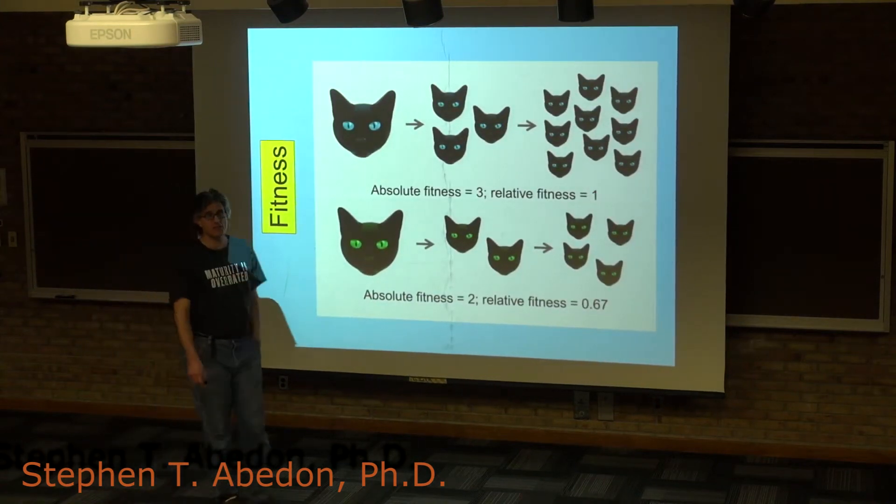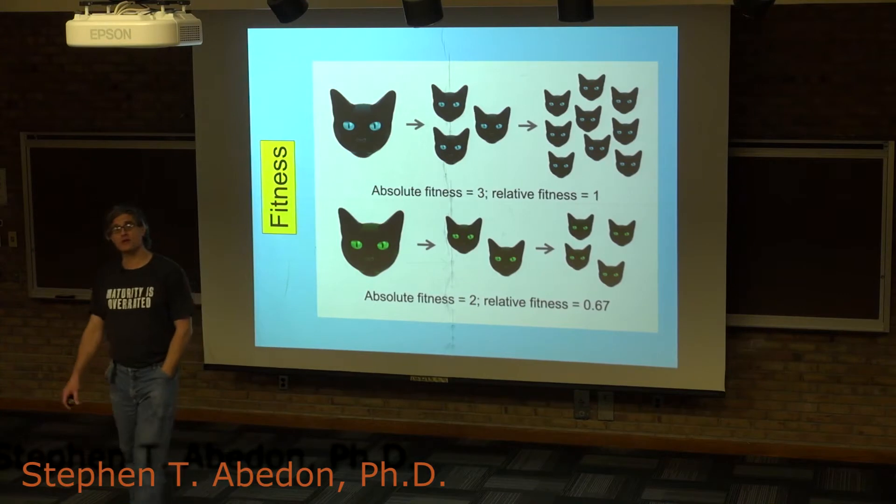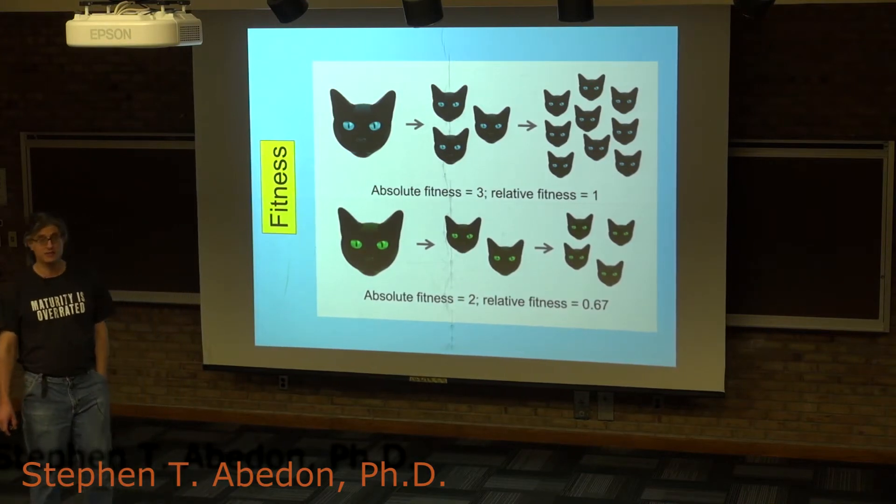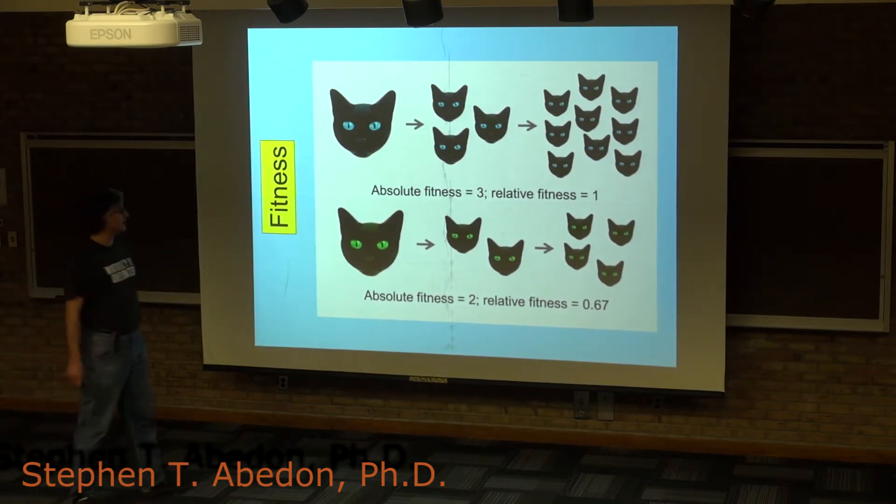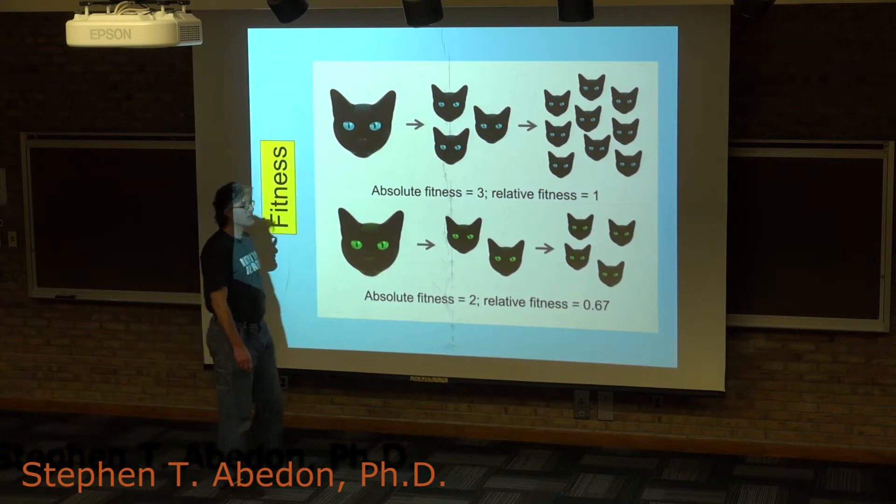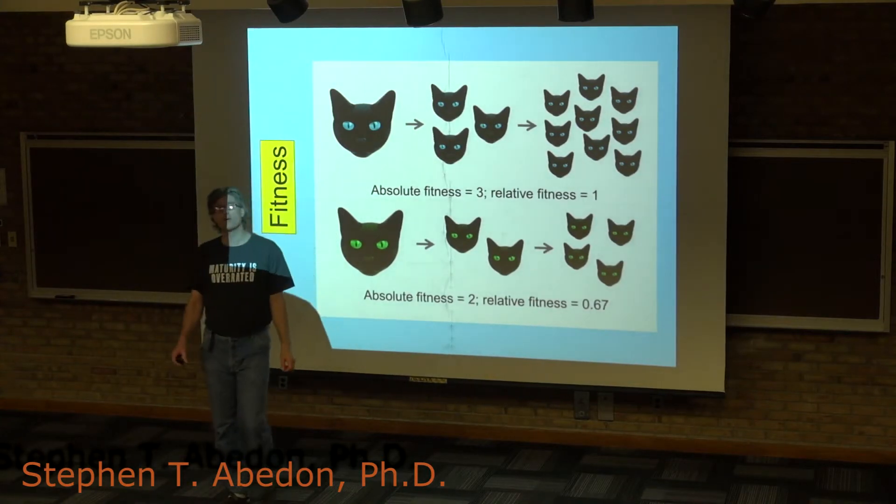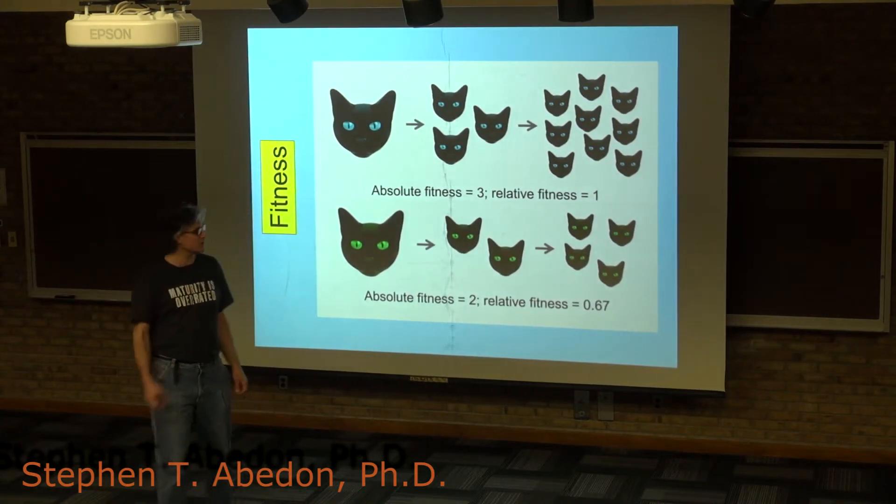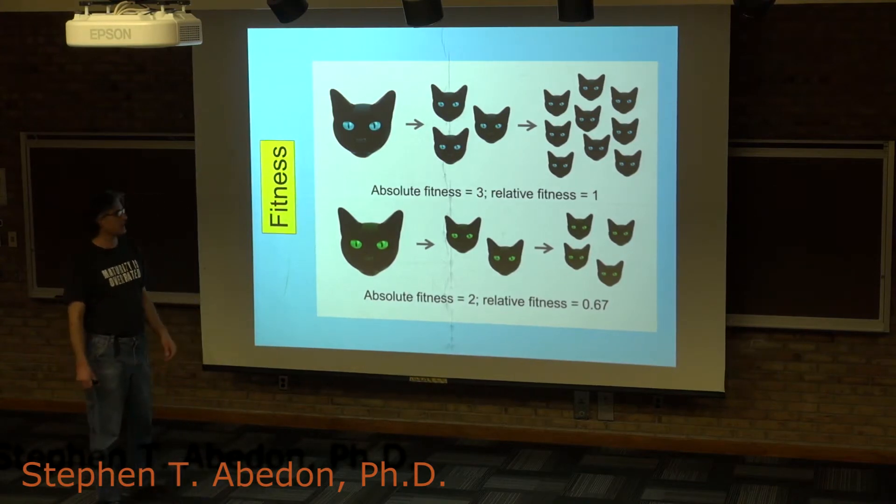When we talk about natural selection, we talk about something known as Darwinian fitness, or simply fitness. That is simply a measure of the number of offspring that are produced by individuals that have a given genotype.